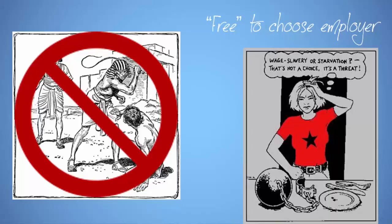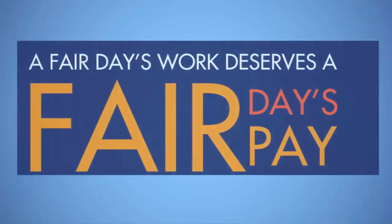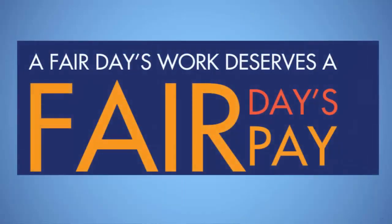Second, the exploitation of capitalism is hidden because of the appearance of a fair exchange in the labour market, between money provided by capitalists and labour provided by workers. Workers are usually paid a money wage after they've performed a certain amount of labour for the week or the fortnight, so it seems as though workers are being paid fairly for their labour and that the money they receive is equivalent to the labour they've provided.